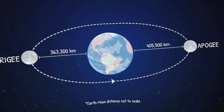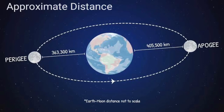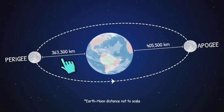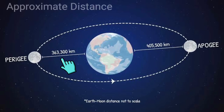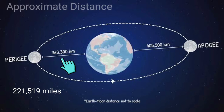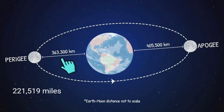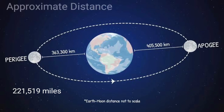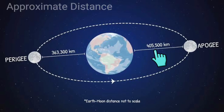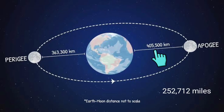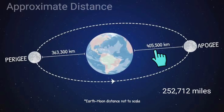When we talk about the distance between the moon and Earth during the time of Perigee, the distance is 356,500 km or 221,519 miles. When we talk about the distance during the time of Apogee, the distance is 456,700 km or 252,712 miles.